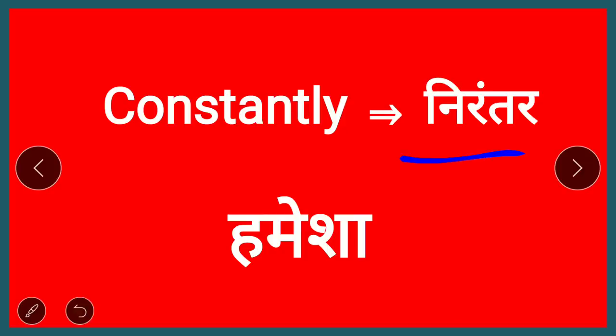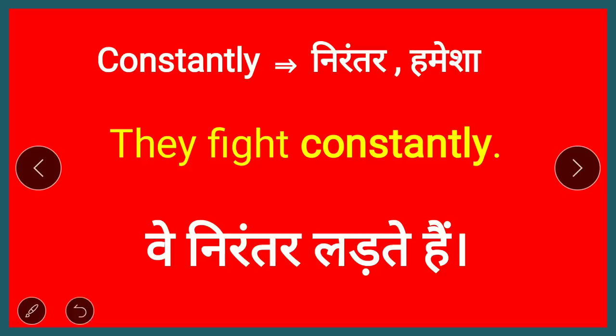Also, 'constantly' means continuously or non-stop — nirantar. You will use 'constantly' for this. For example: 'They fight constantly.' Now you may ask — can we use 'always' here? Yes, you can use both, but there is a difference. 'Always' is used for something that happens repeatedly, like fighting every Monday, Tuesday, Wednesday. But 'constantly' shows something continuous and uninterrupted.